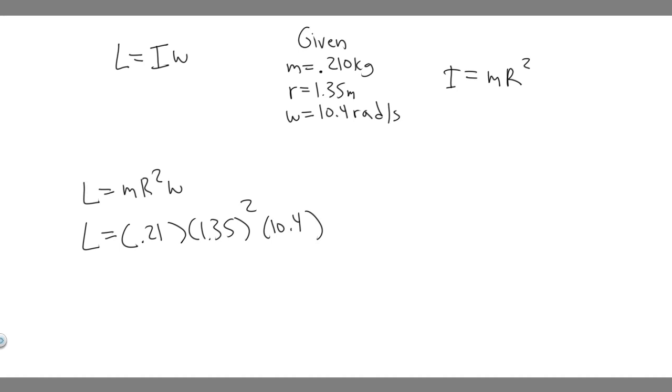So if you go ahead and do this, you want to plug it in your calculator. So 0.21 times 1.35 squared times 10.4. So if you go ahead and do this, you're going to get 3.98034. So I'm just going to round to 3.98.